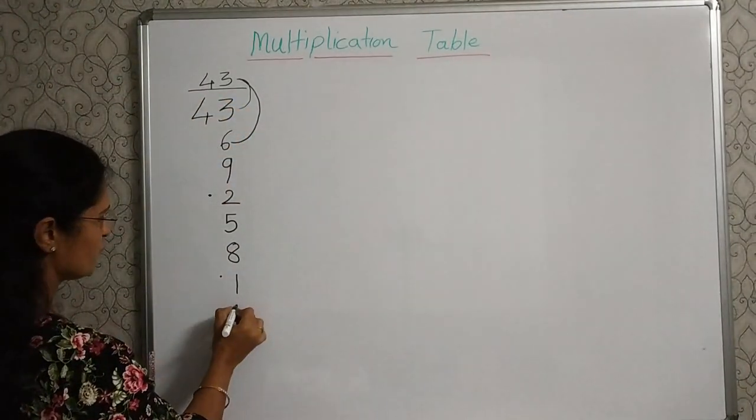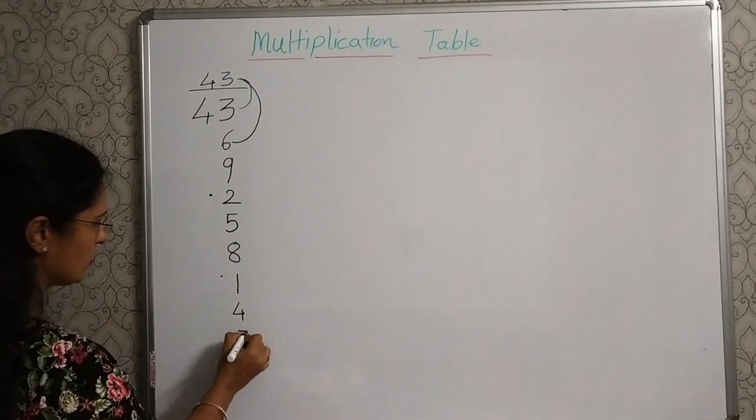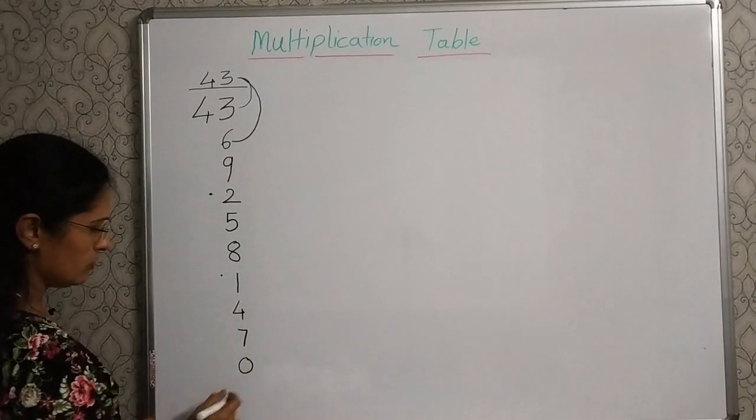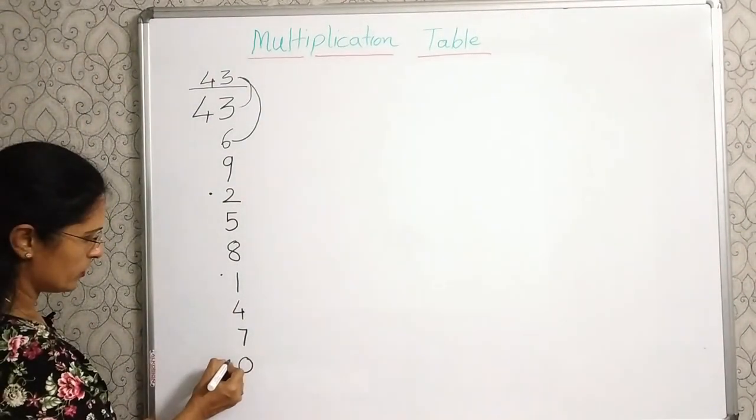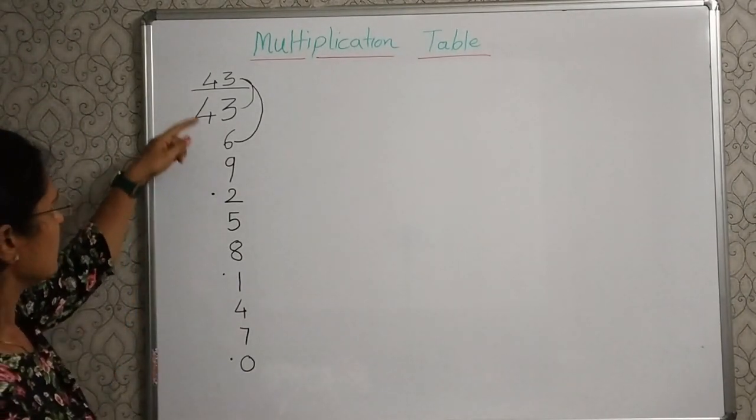Now, 1 plus 3, 4. 4 plus 3, 7. 7 plus 3, 10. Again, 0 here and the carryover dot you will give this side.